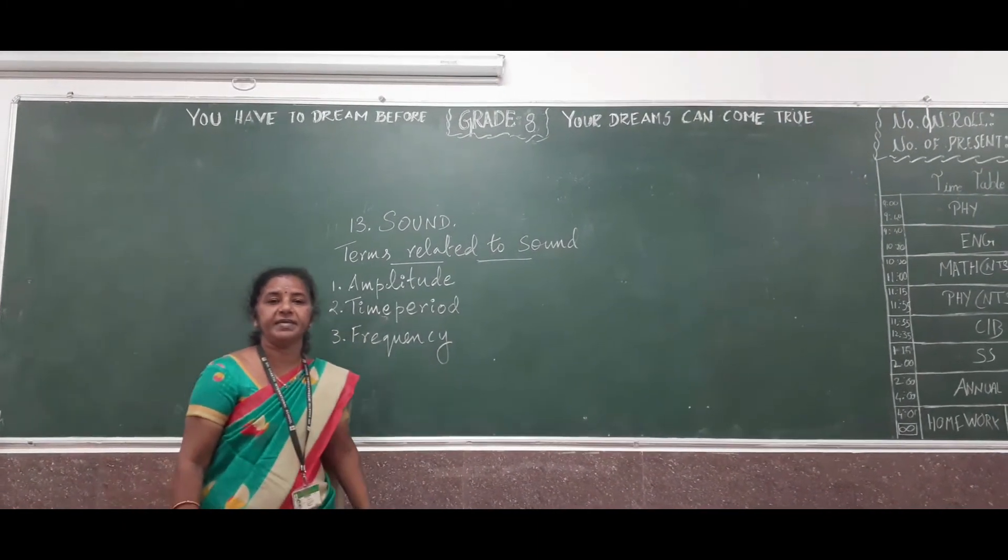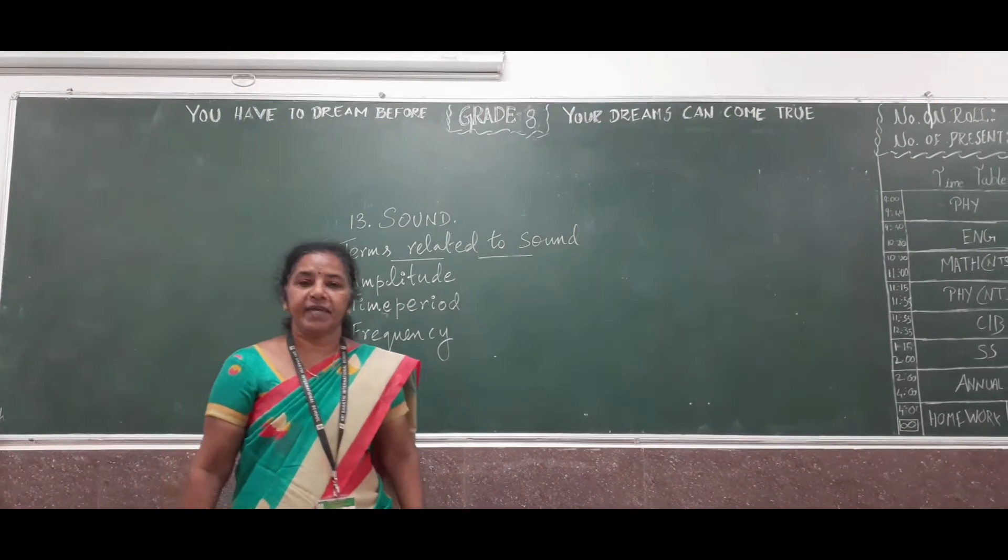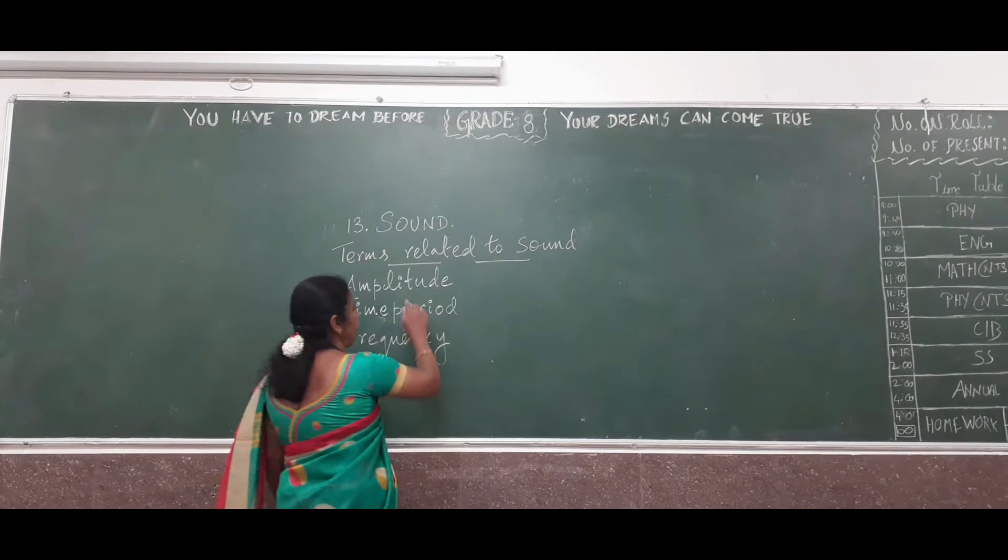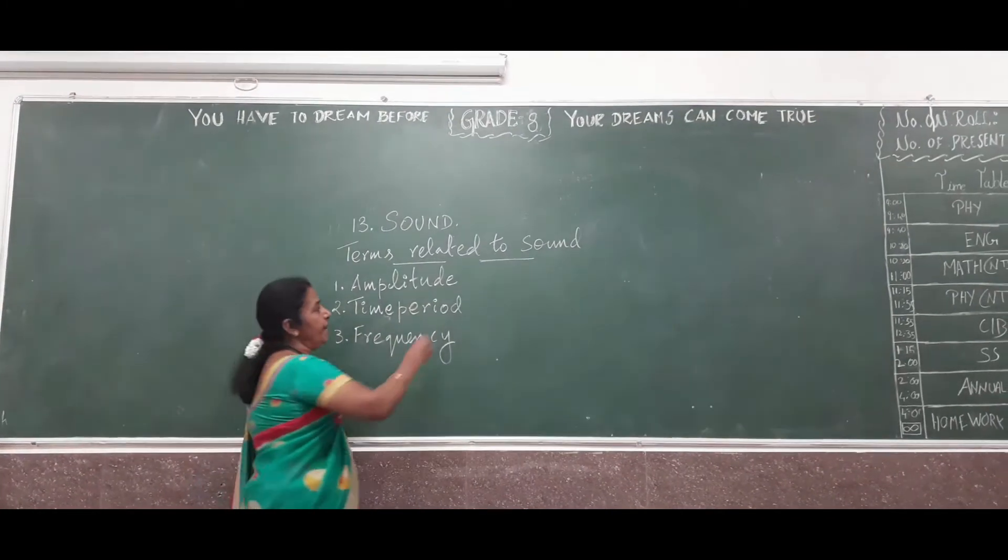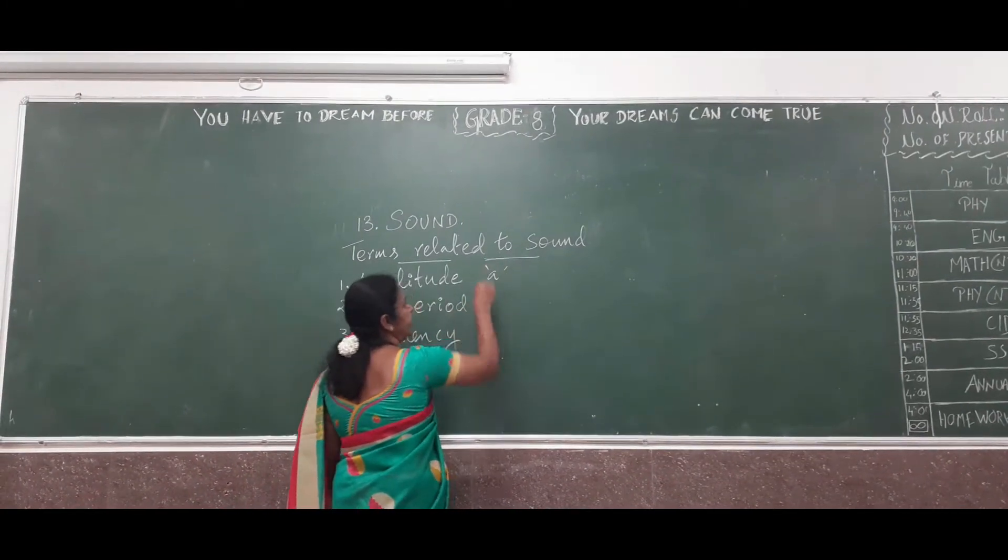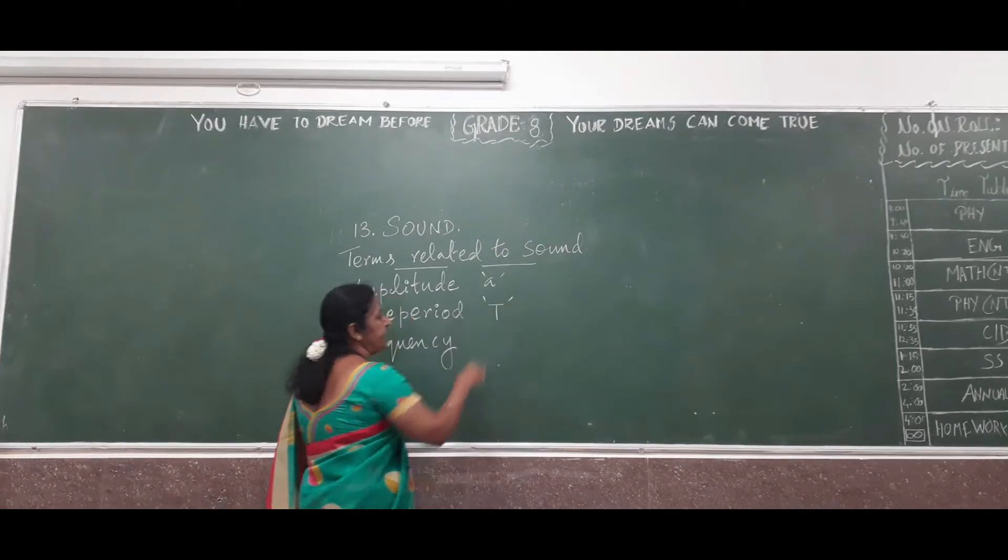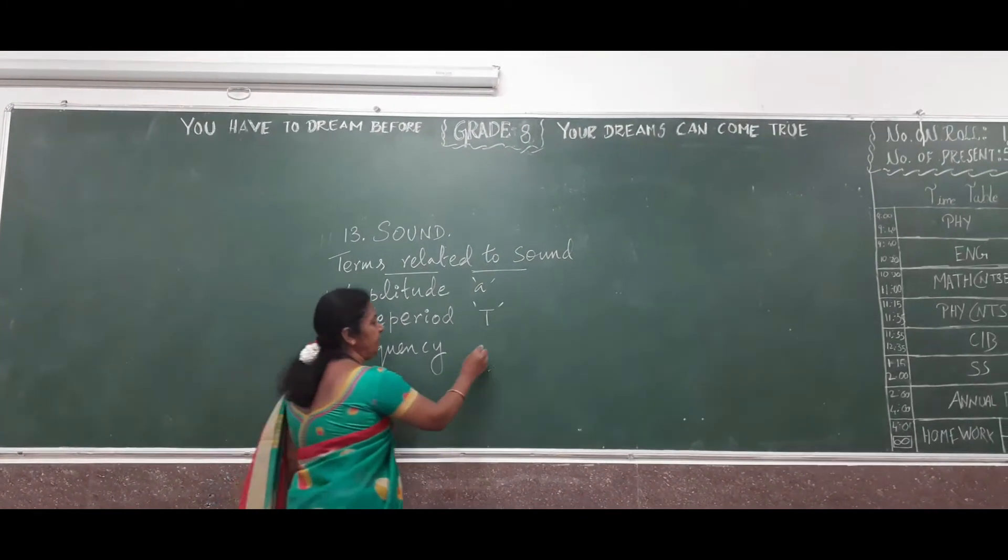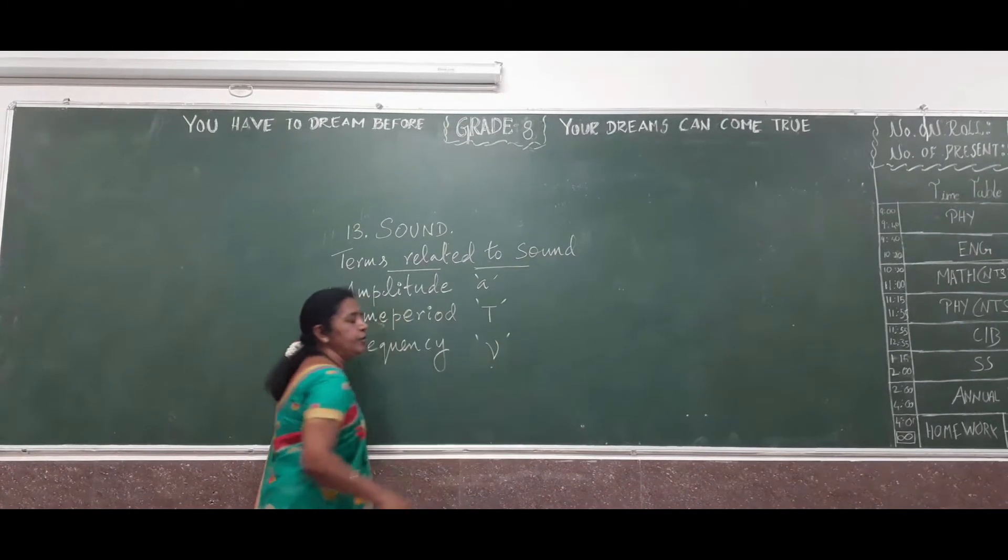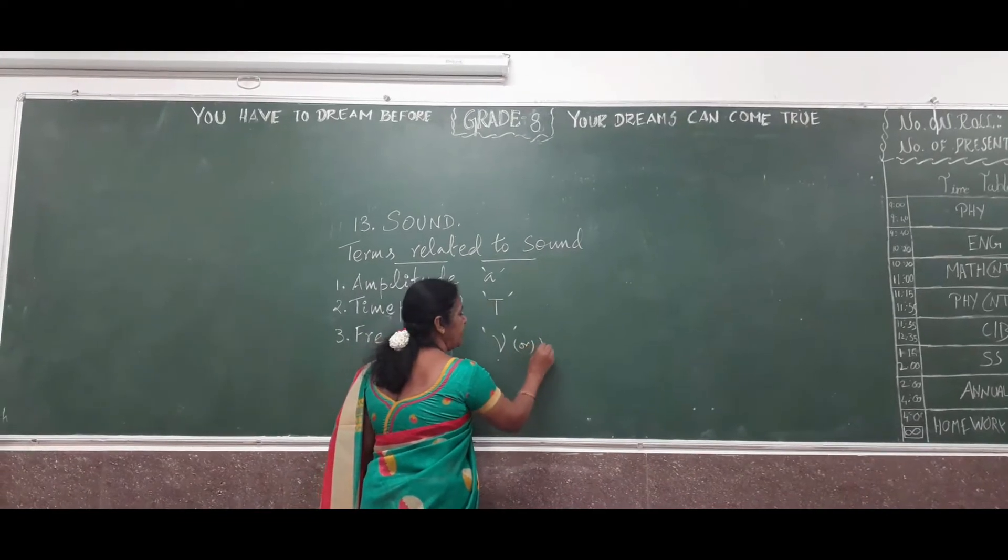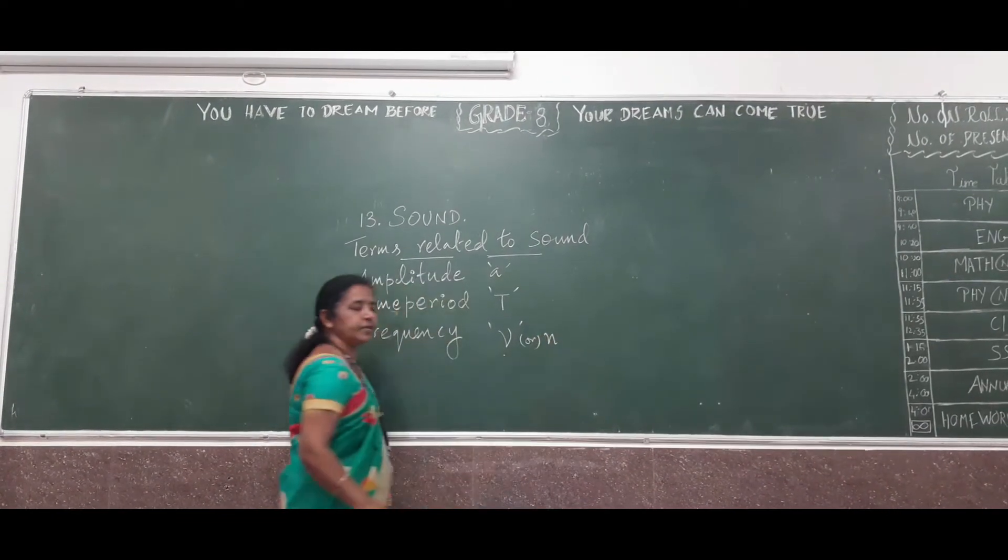These are the three important terms and for that you have the formula and the definitions. First we will see amplitude. Amplitude is denoted by the letter A, time period is denoted by the letter T, and frequency is denoted by the letter mu or otherwise by small letter n also.